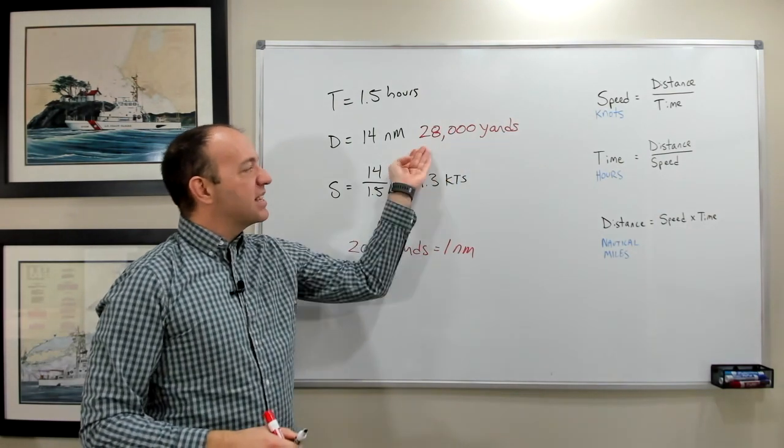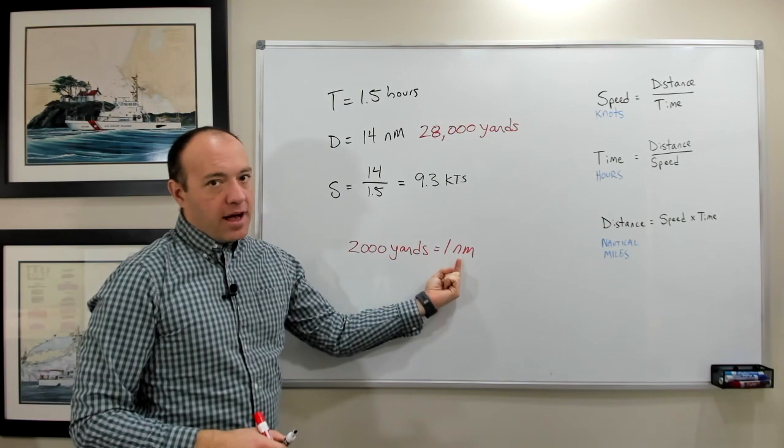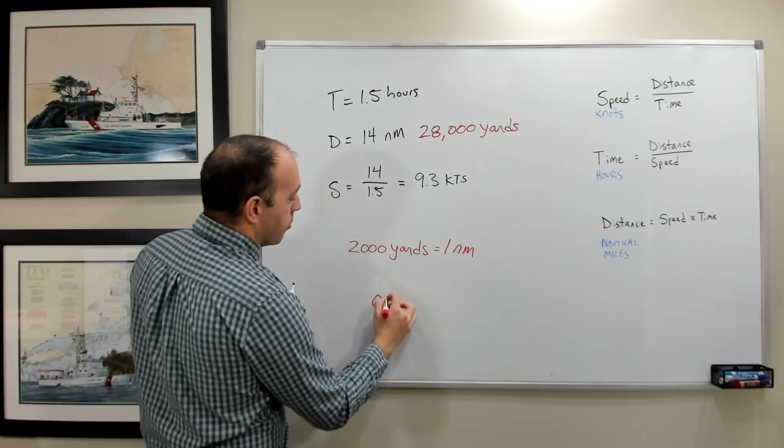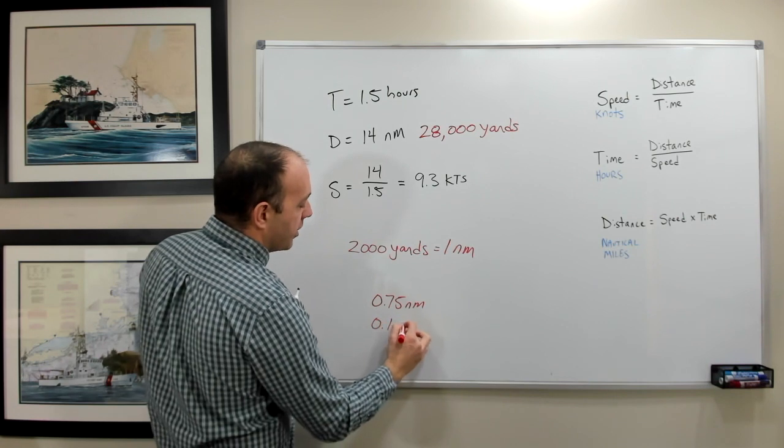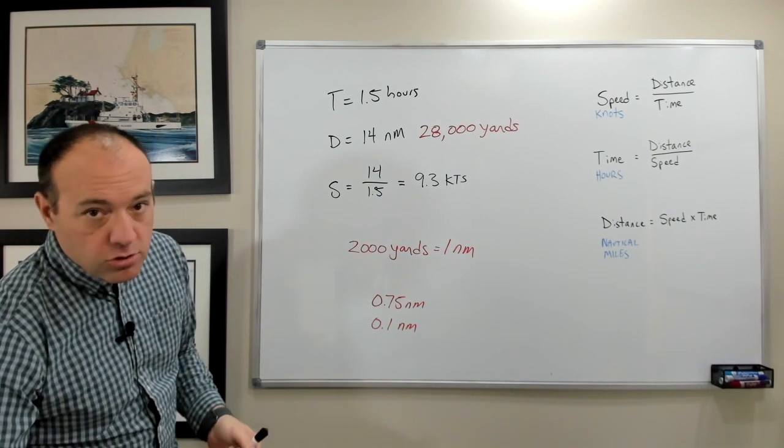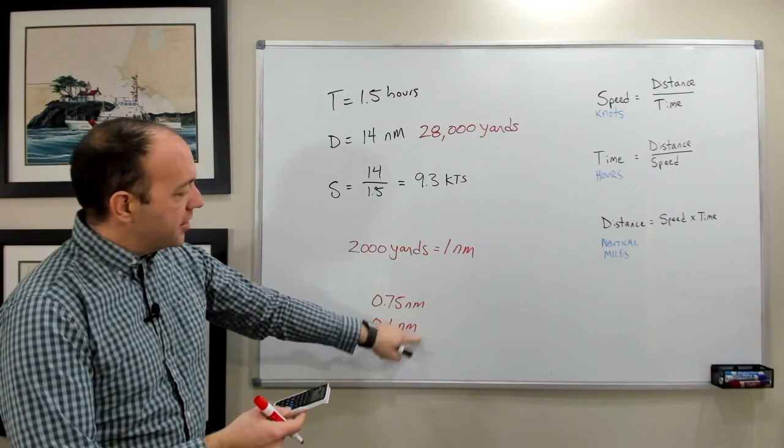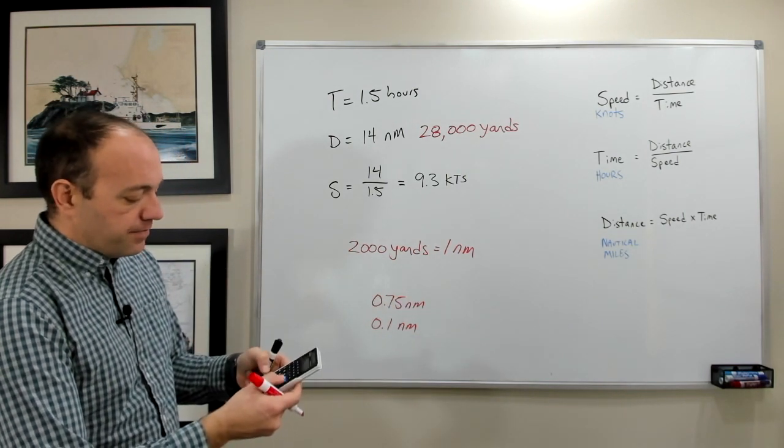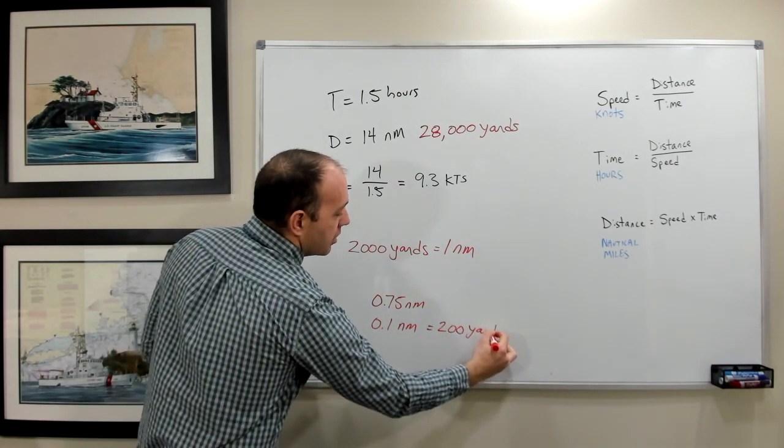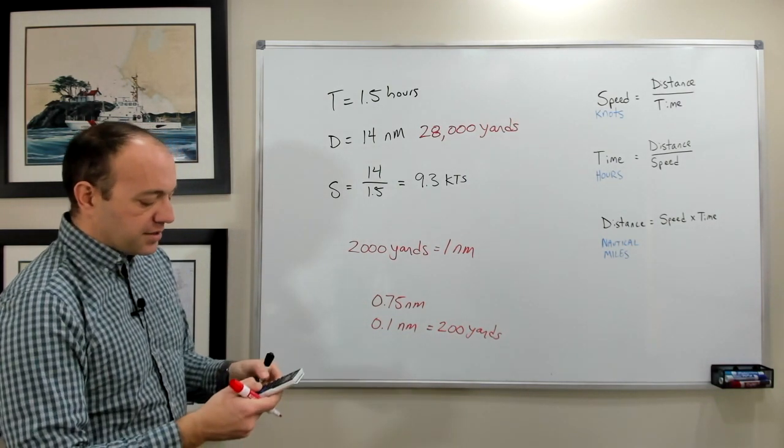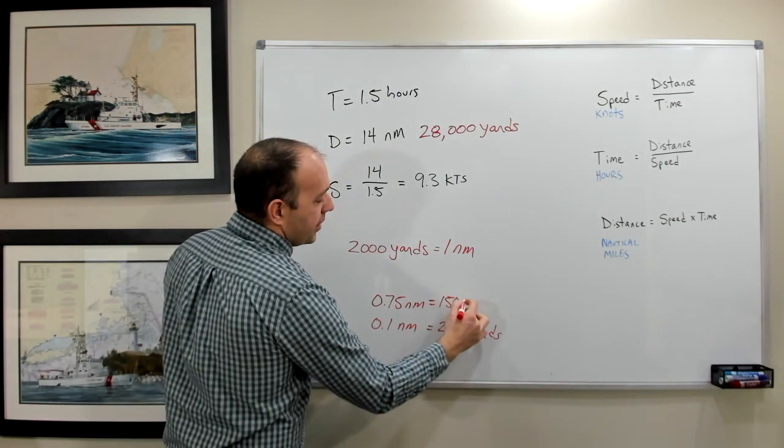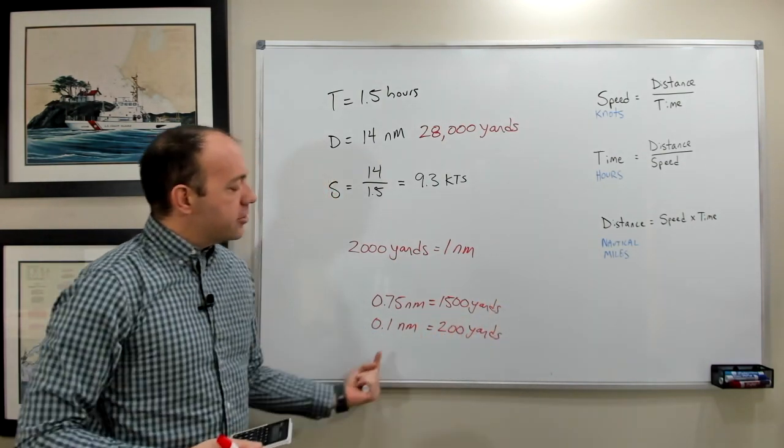Usually you won't see something as big as this. If you're navigating less than a nautical mile, sometimes we'll use yards instead of nautical miles. But it's perfectly okay to say things like 0.75 nautical miles or 0.1 nautical miles as well. But if I did want to know how much yards those are, I can just do my conversions. So 0.1 nautical miles by 2,000 yards is equal to 200 yards. And likewise, 0.75 nautical miles, 0.75 times 2,000, is equal to 1,500 yards. So these are interchangeable things.